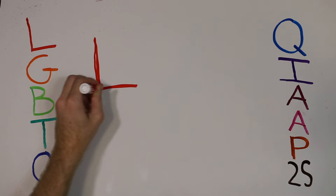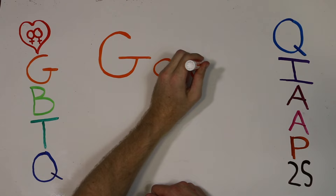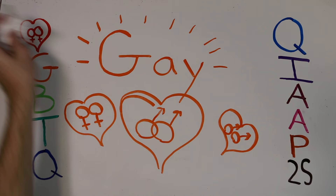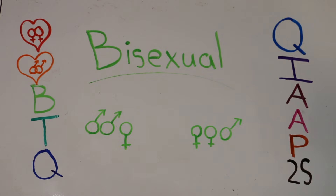The term lesbian refers to a woman who is sexually attracted to other women, and the term gay refers to people who are attracted to members of the same sex, most often men who are attracted to other men. A bisexual person feels sexual attraction to both men and women.